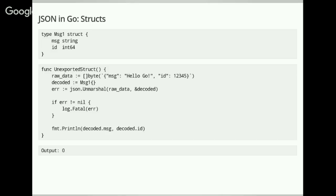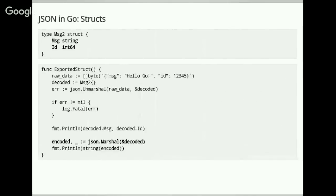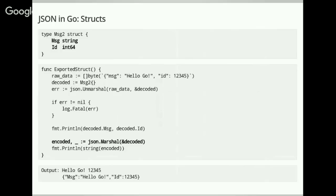We learn that we need to use capital letters at the beginning of field names. Now the first println will actually work and we get the expected output. But then we might modify some values on the struct and send it back to the user, and we get something unexpected again. In the input JSON the key is lowercase 'message', but after decoding and re-encoding, the key in the output JSON is capitalized. The decoder does a case-insensitive match on the member variable name when decoding, but when encoding it takes the capital letter by default. Your client will probably not be happy.